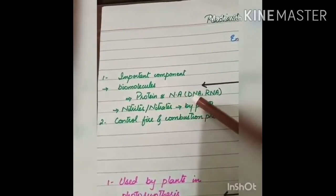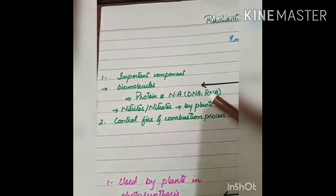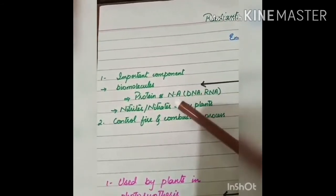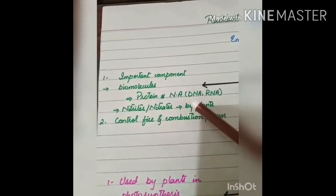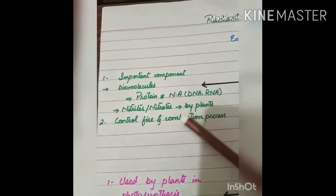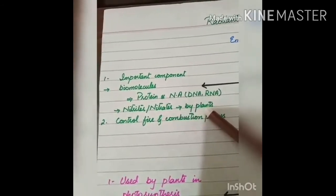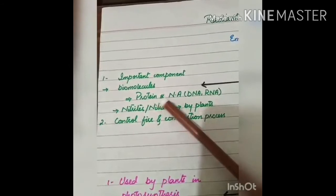Nucleic acids are DNA and RNA. Nitrogen is converted into nitrites and nitrates first and then utilized by the plants to produce the biomolecules like proteins and nucleic acid.